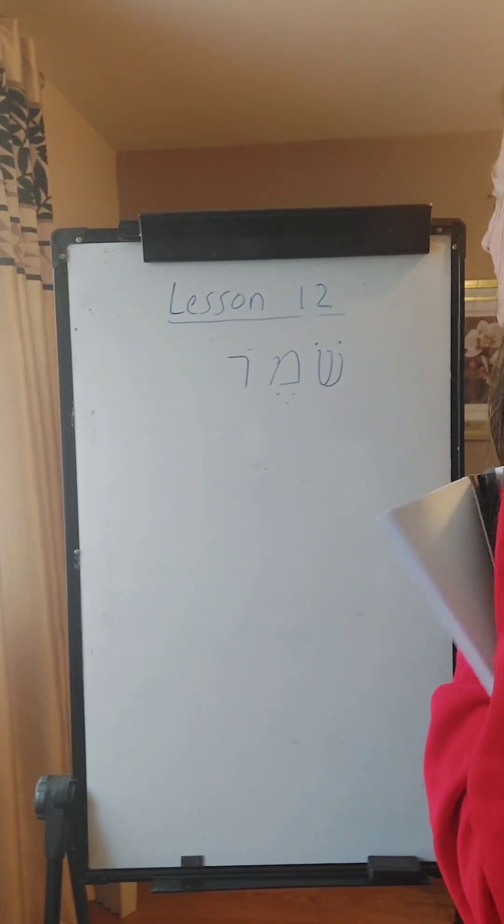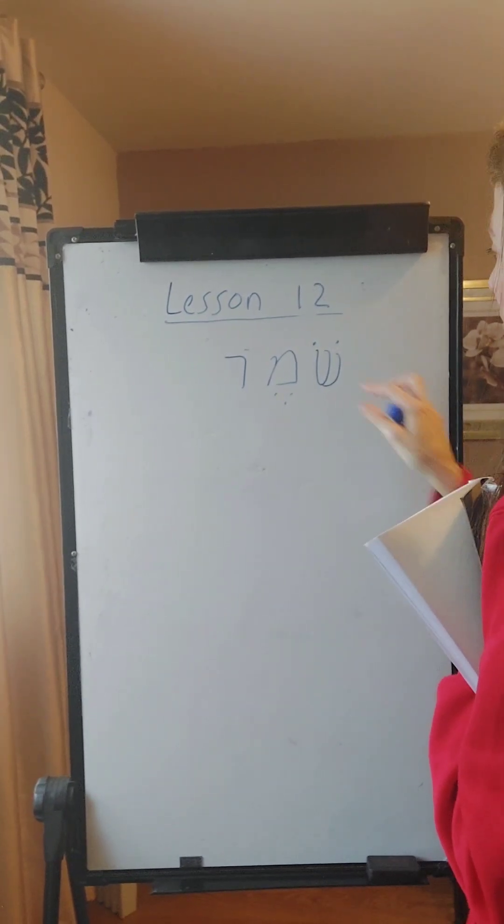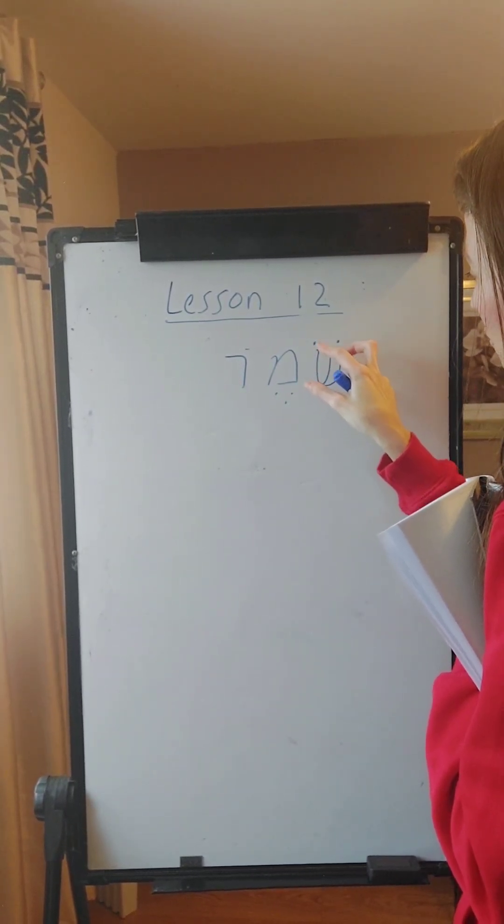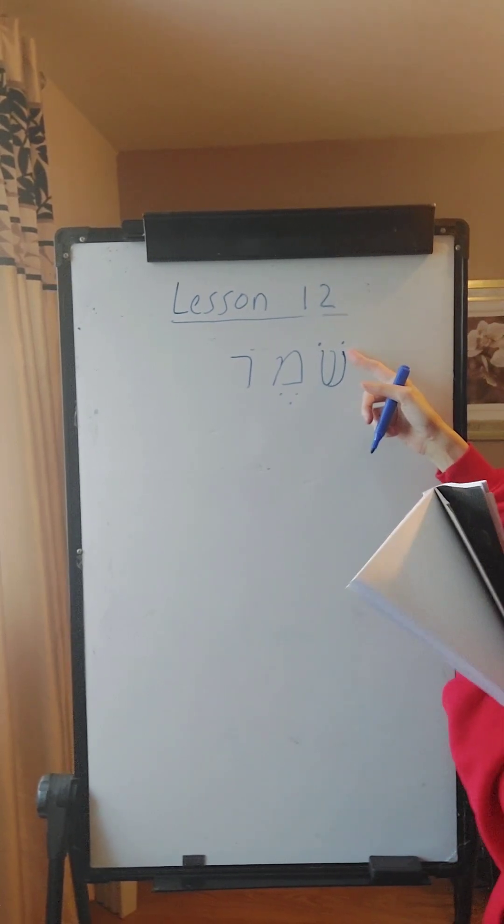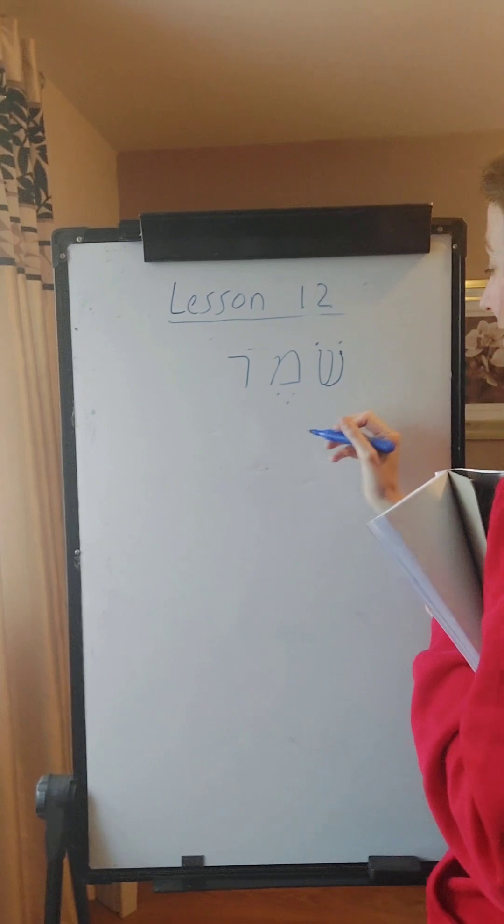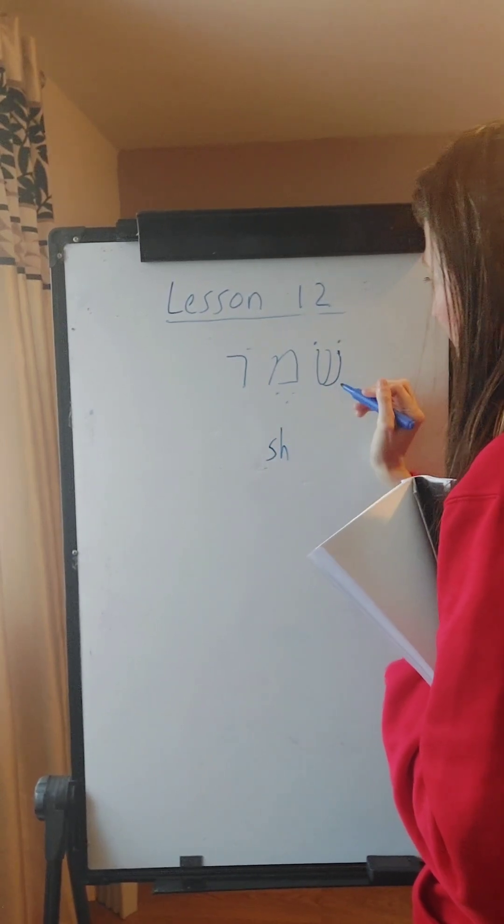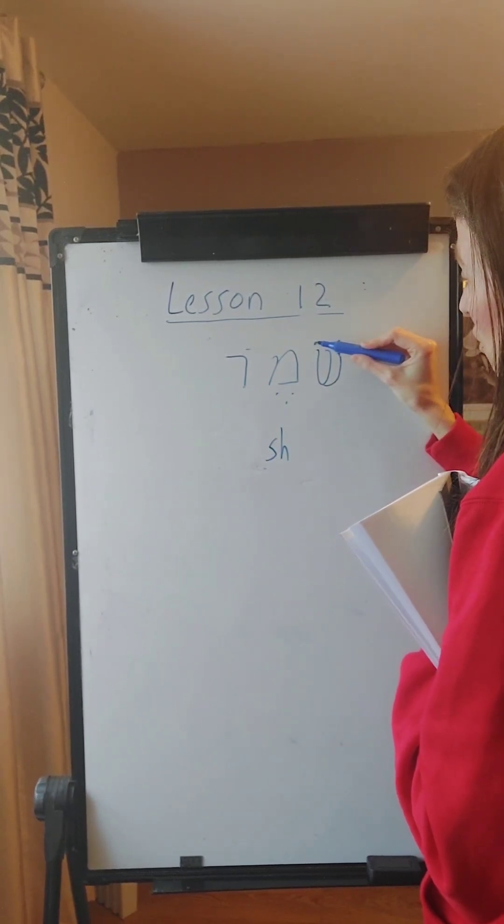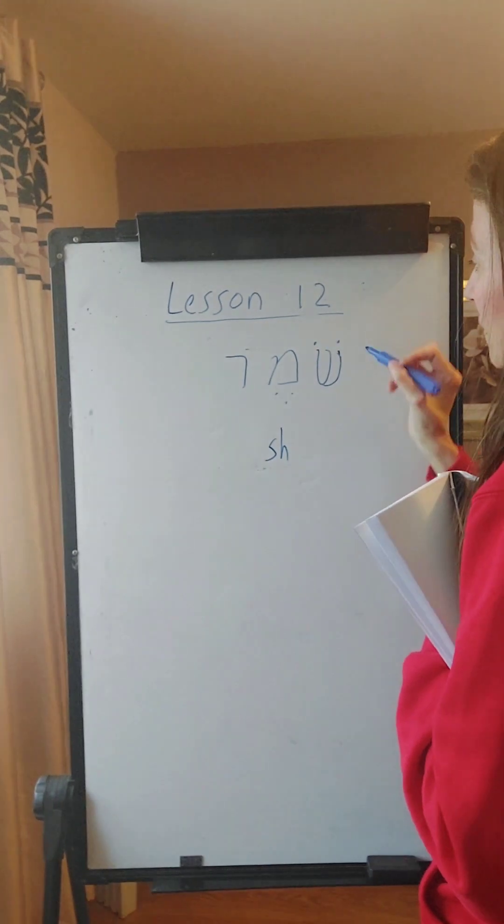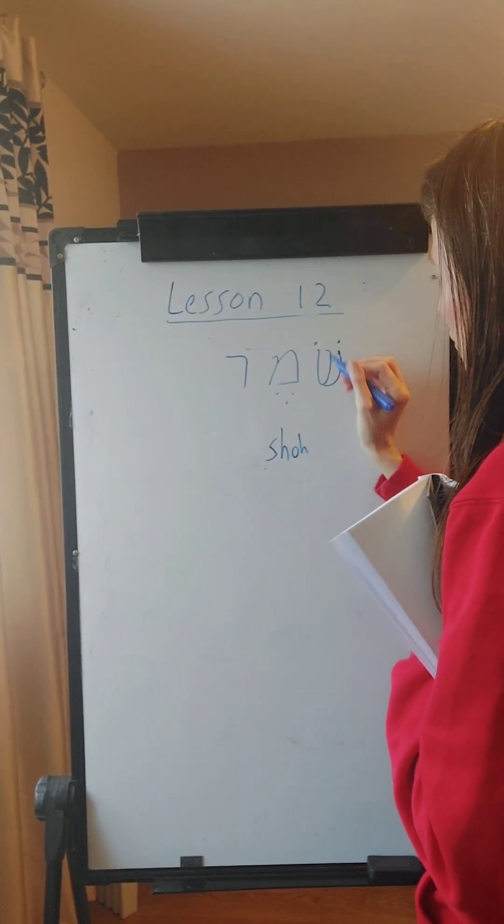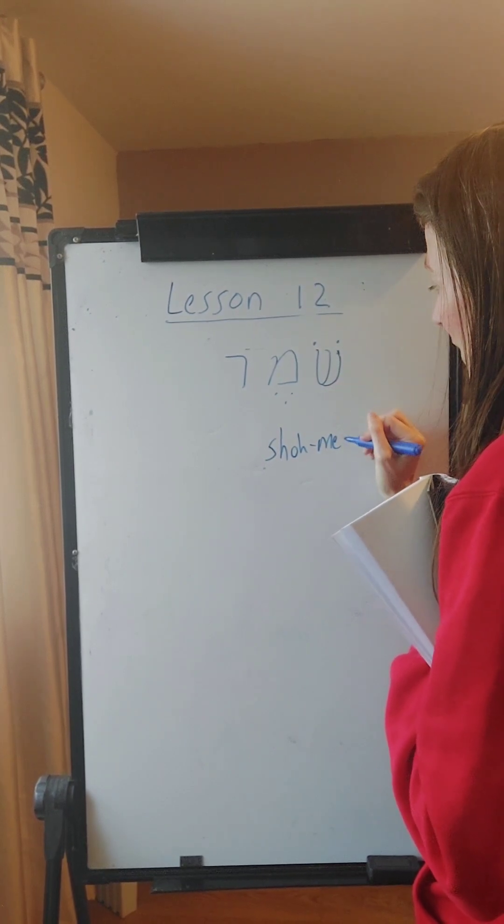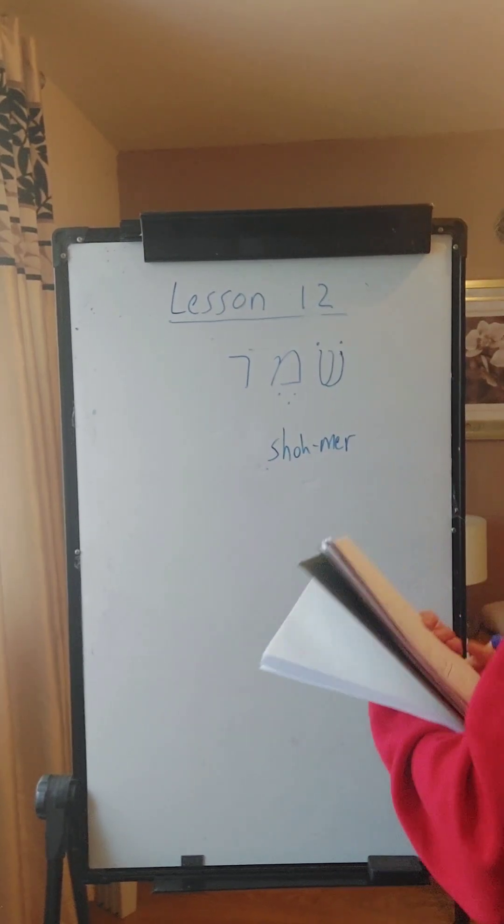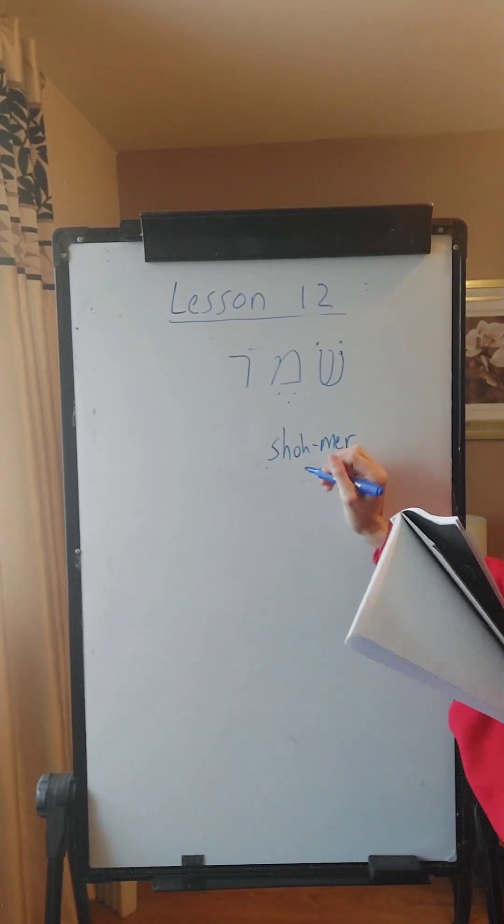Okay, so this one, you notice the Shin has two dots. The dot on the right of the Shin is always the sh sound. Then the dot used for the vowel is the vowel sound for the O. So sho, the Mem, M, E vowel, shume, which is god.